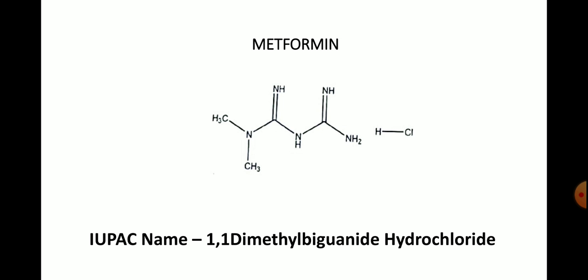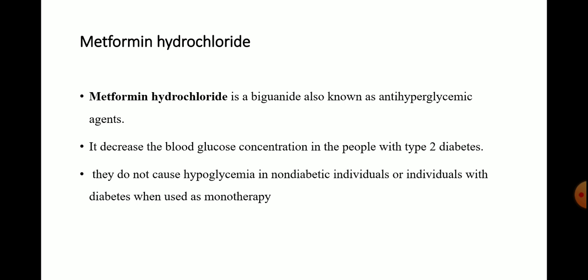This is the structure of your metformin. The IUPAC nomenclature of metformin is 1,1-dimethyl biguanide hydrochloride. Metformin hydrochloride is a biguanide, also known as an anti-hyperglycemic agent.